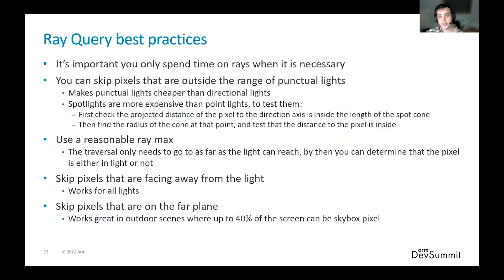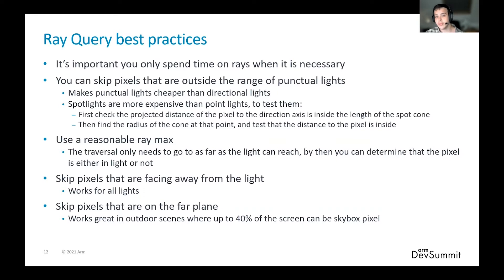Another tip is to make sure you set your RayMax to the distance you've just calculated, to avoid the ray needing to be traced across the entire scene. The next tip is to skip pixels that are not facing the light at all. Since we've already generated our geometry in the G-buffer path of our deferred renderer, we have access to surface normal information and can use the dot product of the normal to the direction of the light to determine whether the surface is facing the light. If it is not, we can determine it must be in shadow. Lastly, skip pixels that have no geometry drawn to them — for example, the far plane or the clear value of the depth buffer — especially beneficial for outdoor scenes where most pixels toward the top of the frame can just be the skybox.